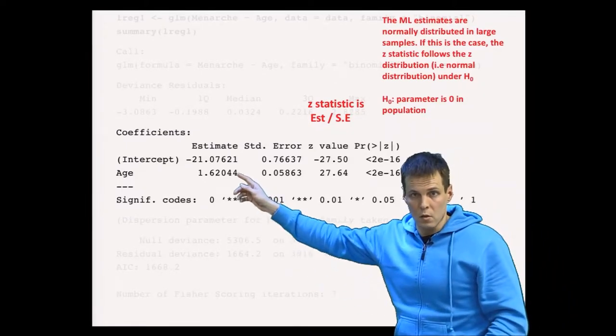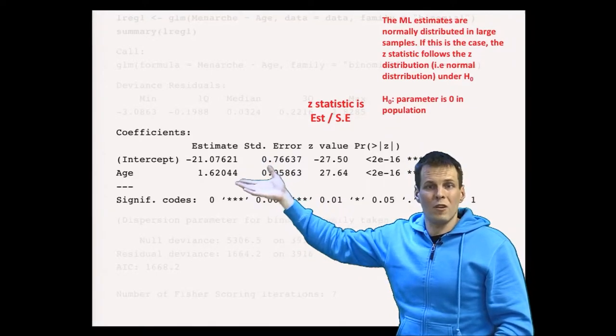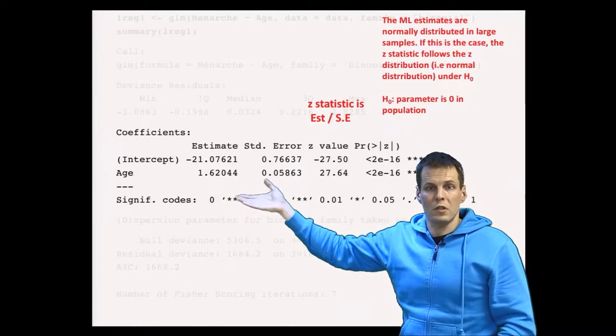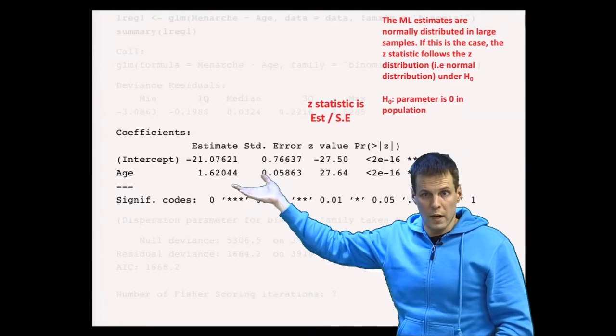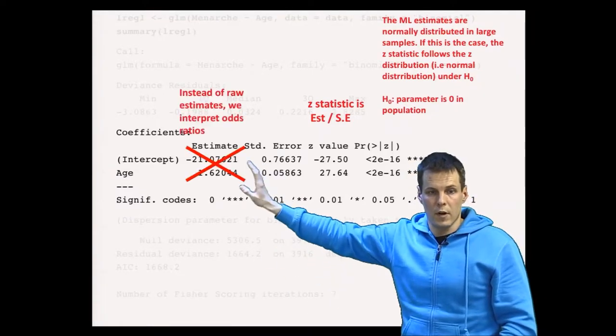This coefficient here tells you what is the effect in the scale of the linear predictor, but you are not really interested in that. You are interested in what is the effect on the observed variable scale. So we don't interpret these directly.